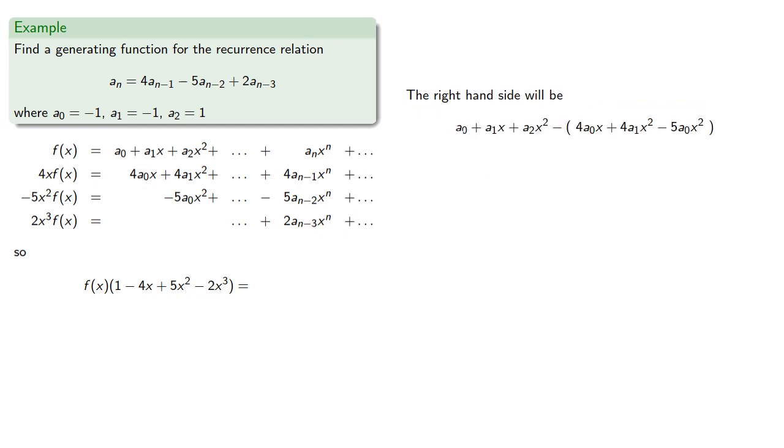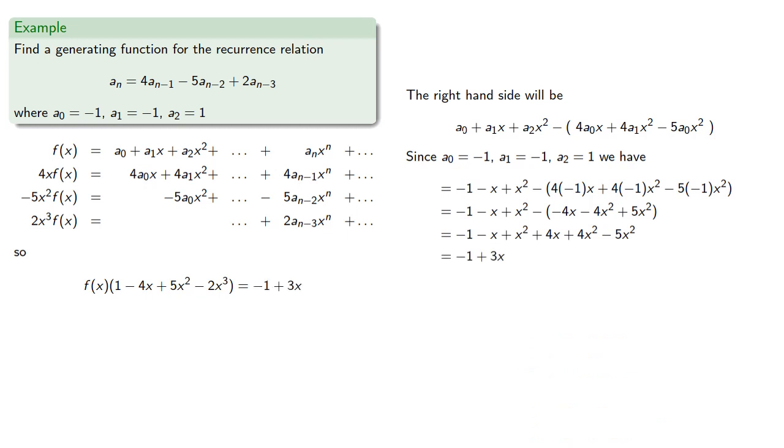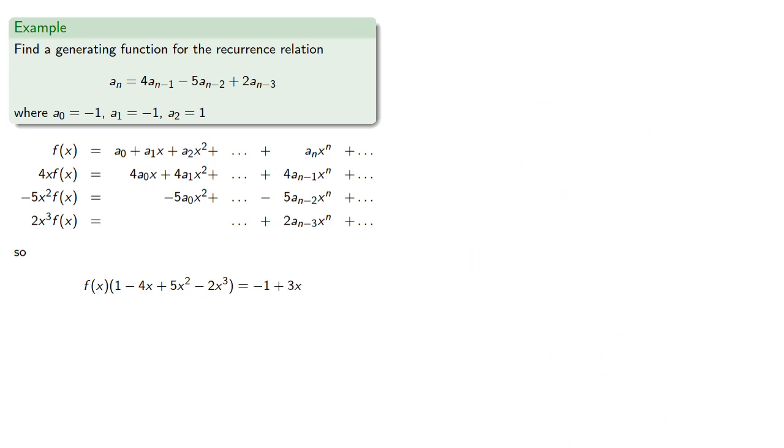The right-hand side will be..., and since we know a0, a1, and a2, we can simplify to get... and finally we can solve for f(x) to get...